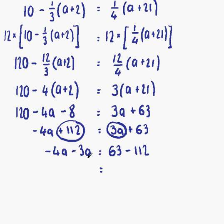Minus 4a minus 3a is minus 7a. And that is equal to 63 minus 112. That gives us minus 49.